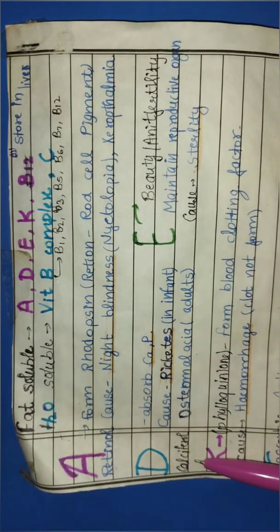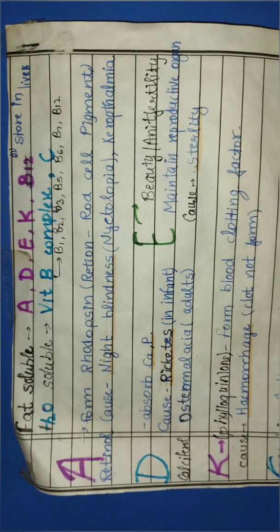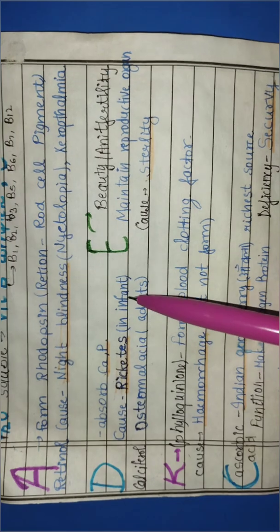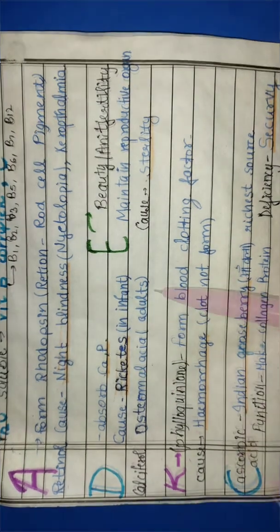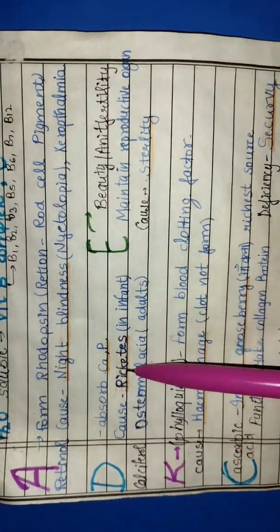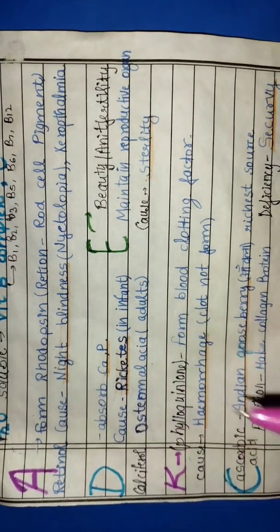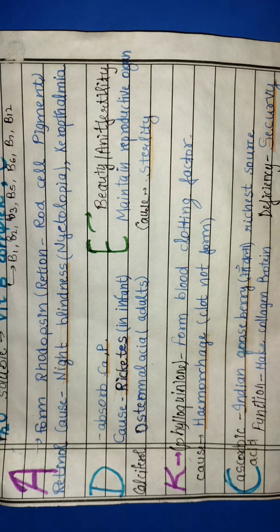Next, see vitamin D, which is called Calciferol. Scientific name is Calciferol and this will cause rickets. In infants and children, it causes rickets. In adults, it causes osteomalacia. In rickets, it affects the bones. In osteomalacia, it reduces bone density.